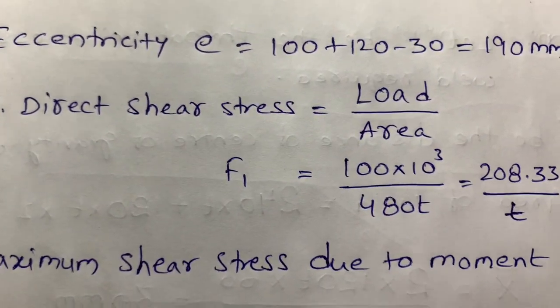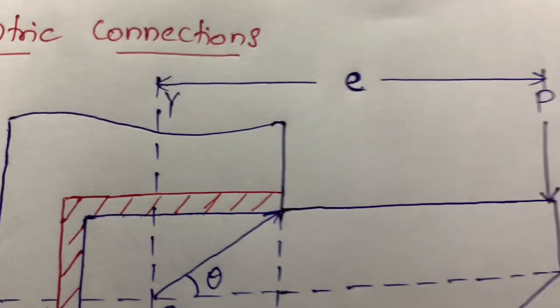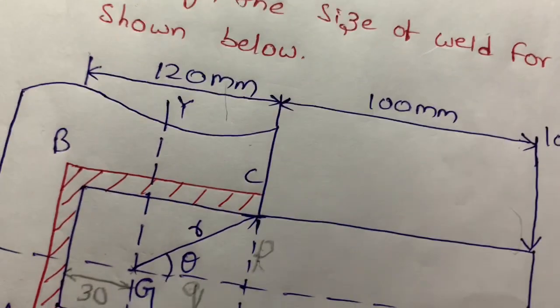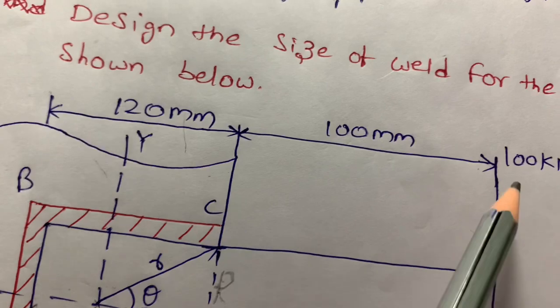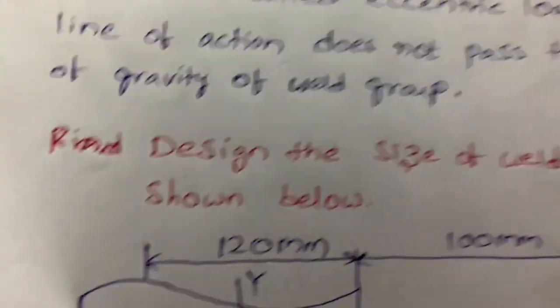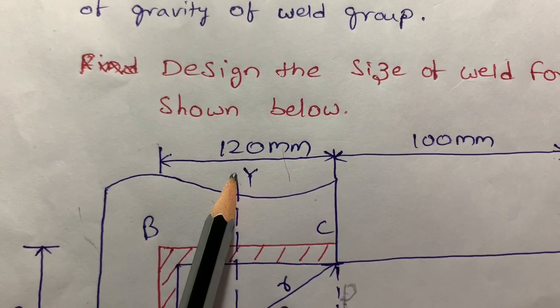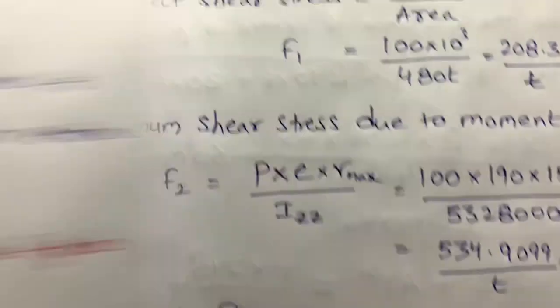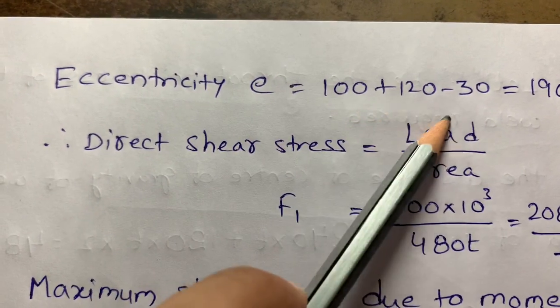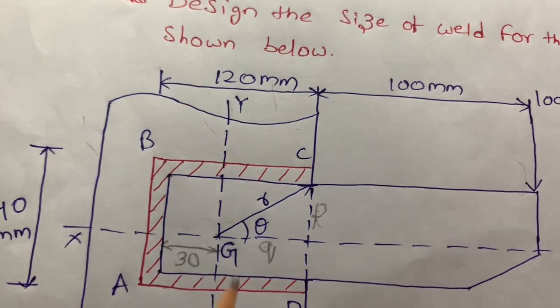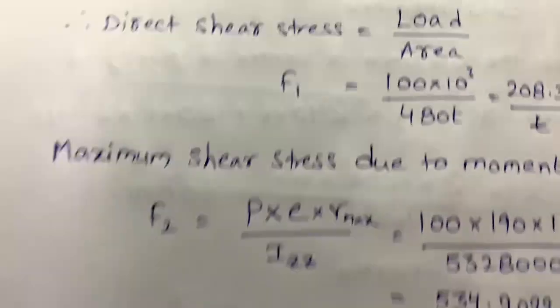Now I am going to calculate the eccentric distance. Eccentricity means the distance from the center of gravity to the load point. In our diagram, we know the distance from here to here. The total distance is 100 plus 120, and the remaining distance from X-bar is 30. So eccentricity equals 120 minus 30 plus 100, giving 190 mm.